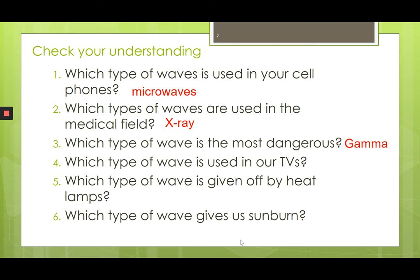Which type of wave is used in TV? That's actually radio FM. Remember that radio waves are light waves, and how we hear this is by using an electromagnet to convert the electromagnetic wave into a sound wave. Which type of wave is given off by heat lamps? That's infrared — we actually produce infrared, and sometimes people use infrared goggles to detect individuals in the dark. Which type of wave can give you a sunburn? That's ultraviolet, and using sunscreen can help with the ultraviolet radiation.